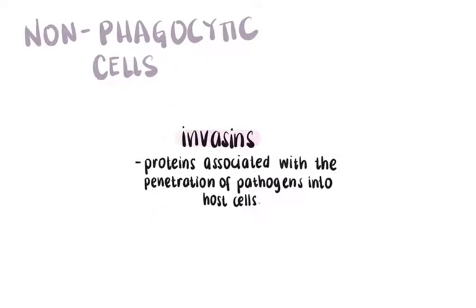Aside from the survival mechanisms against phagocytosis, there is also a non-phagocytic way that bacteria use to hide from the host immune system. These intracellular pathogens enter safely into non-phagocytic cells by expressing proteins called invasins.